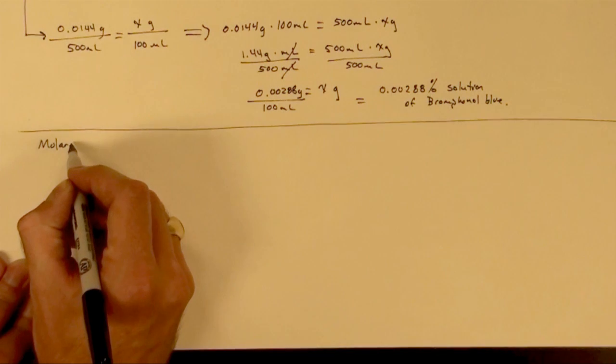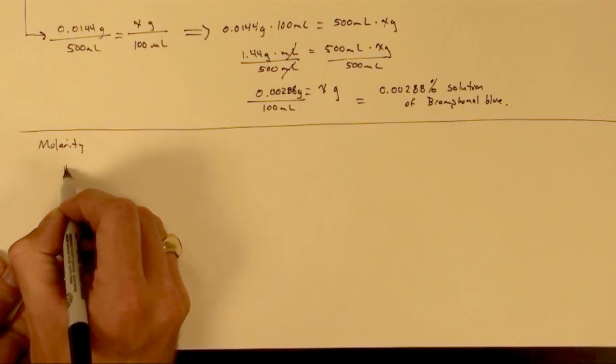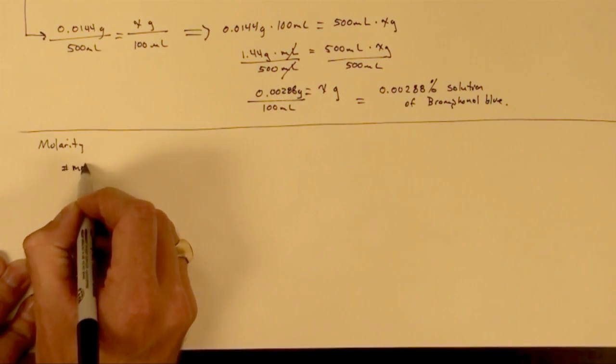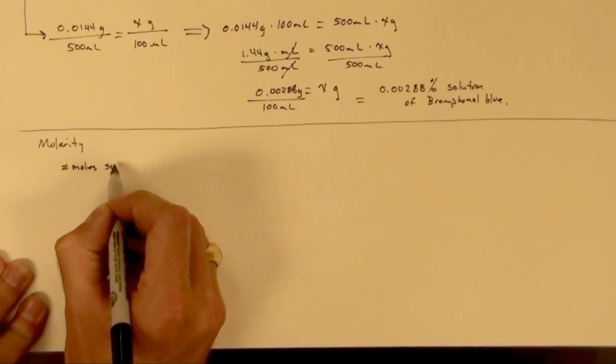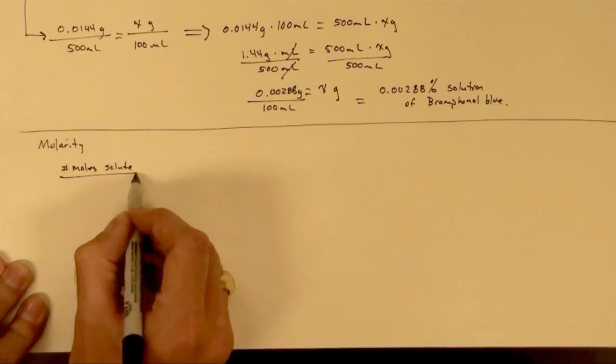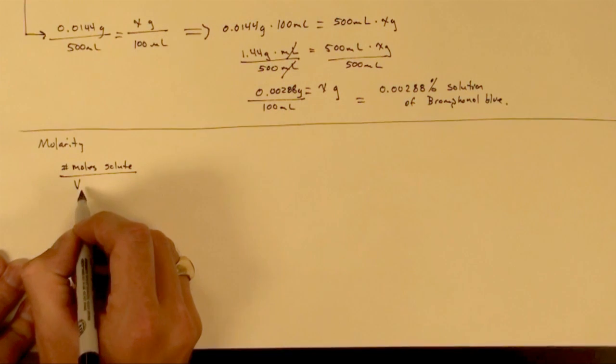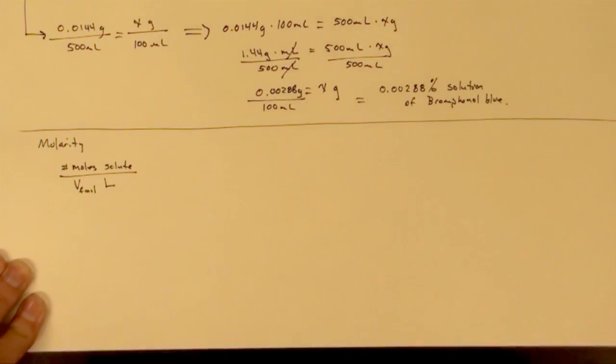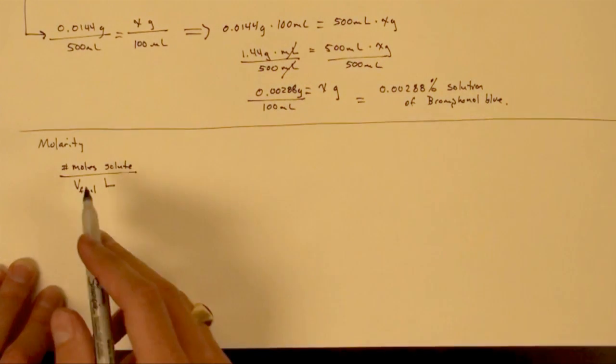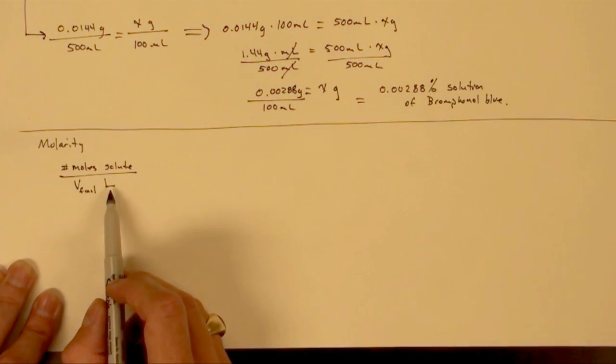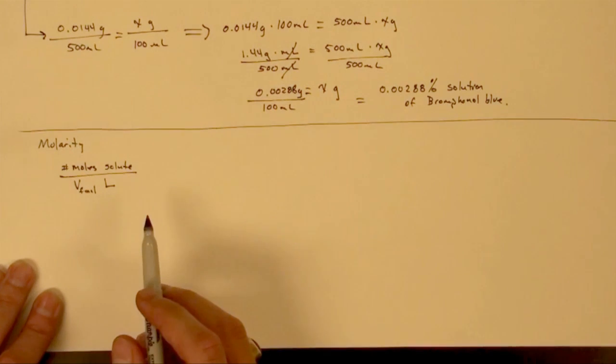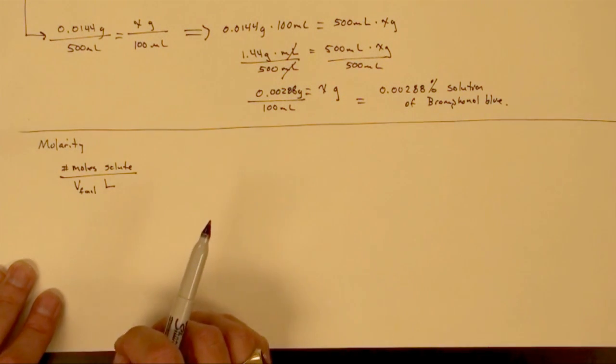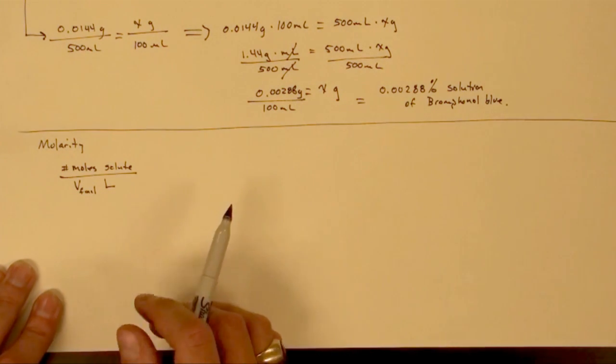So molarity, by definition, is the number of moles of a solute to a final volume of one liter. So the volume is going to be one liter, it's number of moles of solute per liter. That will determine the molarity or that type of concentration of that solution.